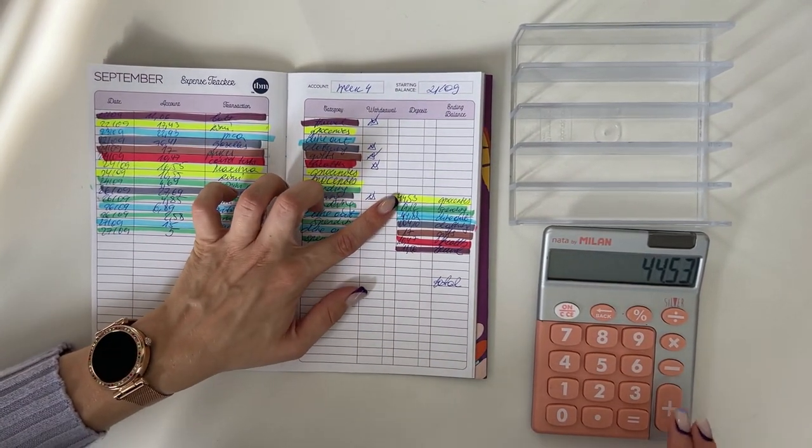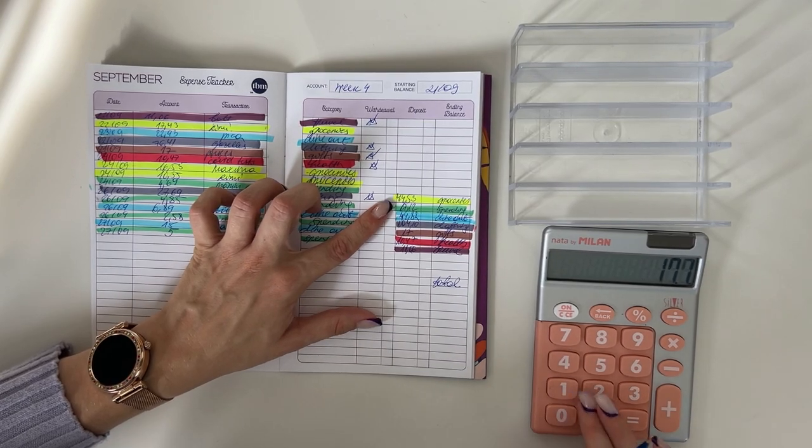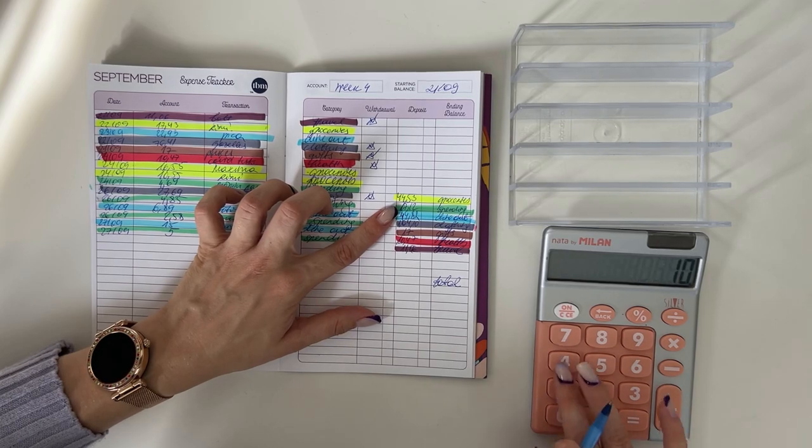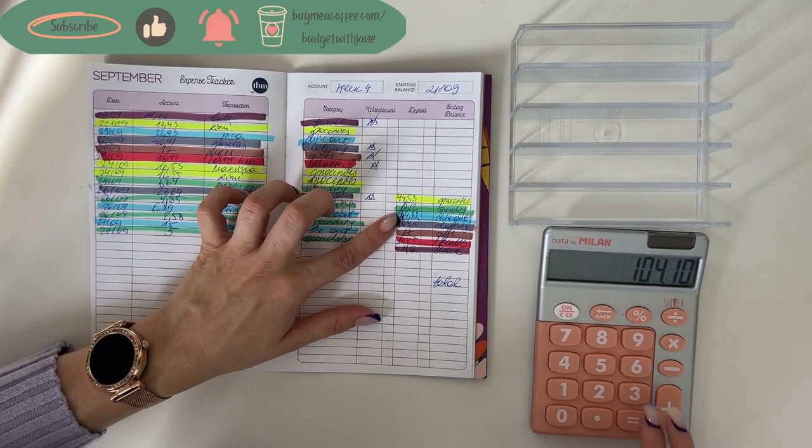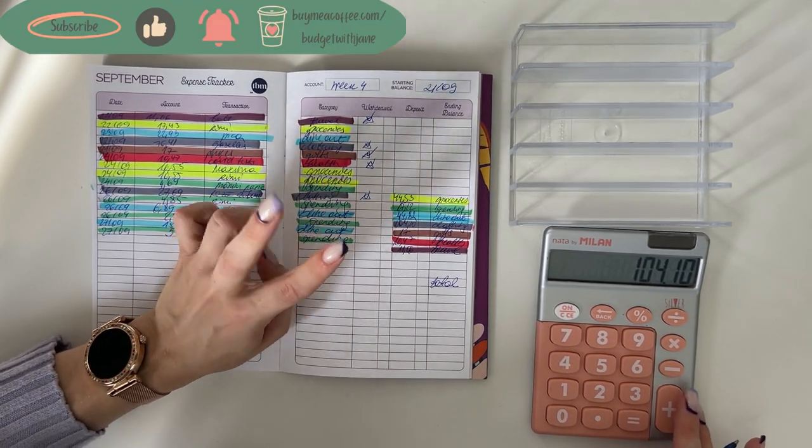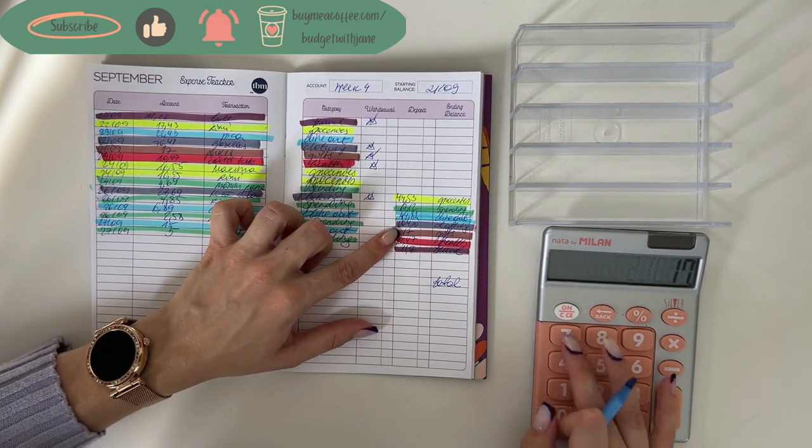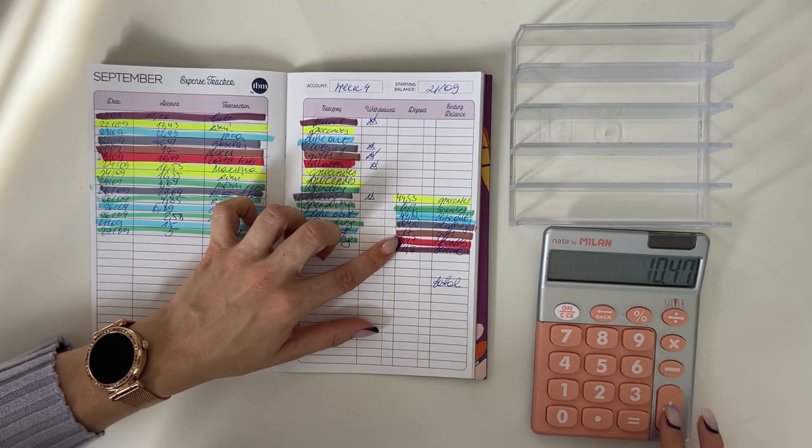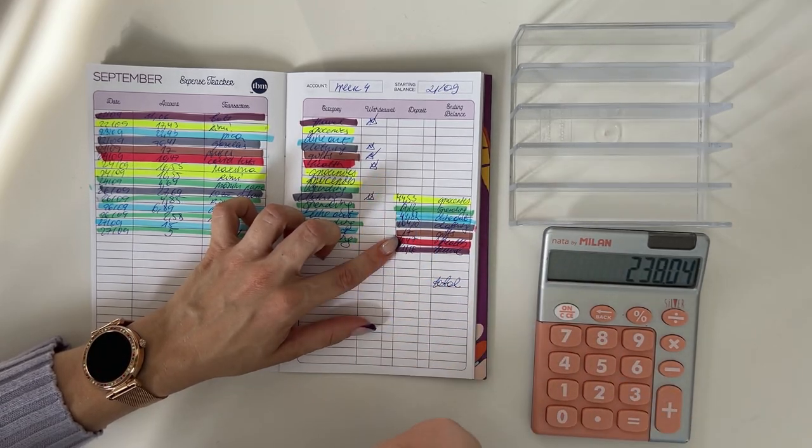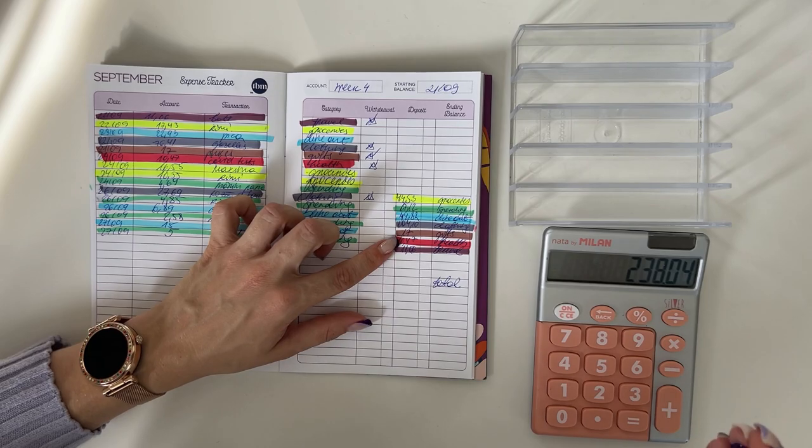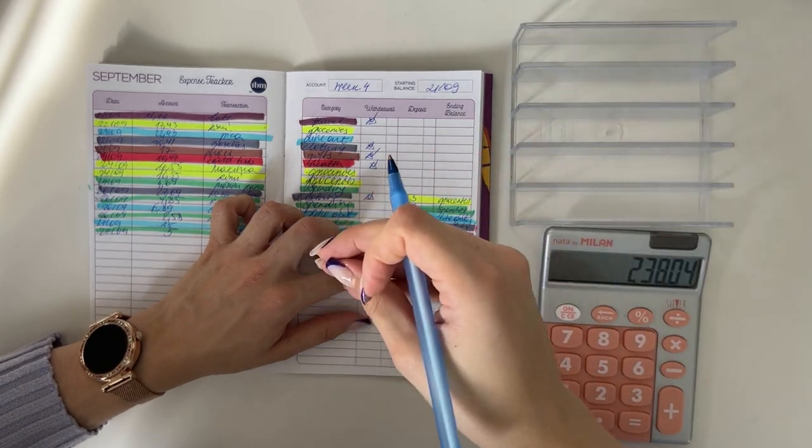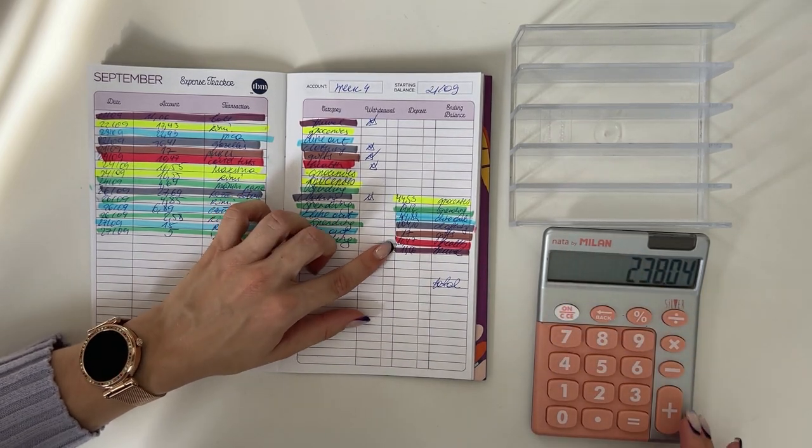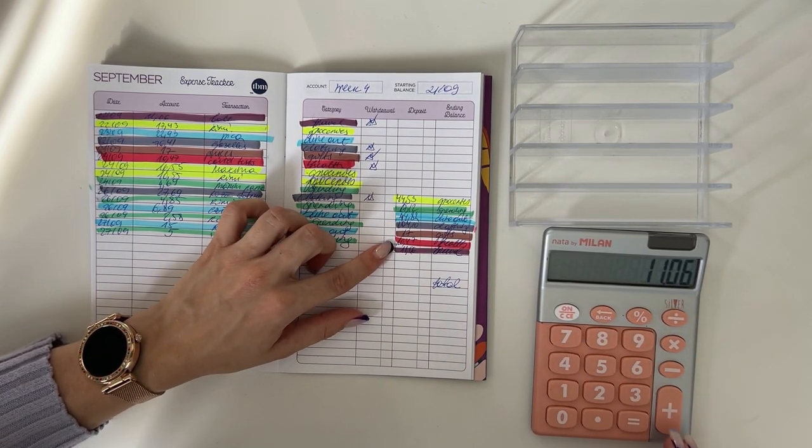So $44.53 was groceries, $17.12 was spending, $44.82 was dine out, $104.10 was clothing because I bought two new pairs of shoes, $17 was gifts for some flowers, $10.47 was health for some COVID tests because I did have COVID but thankfully I'm negative already and it was my first time having COVID.